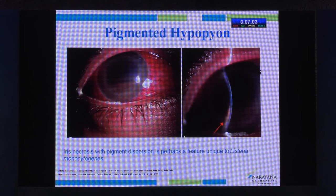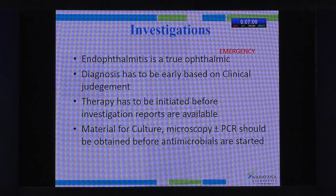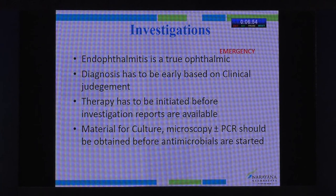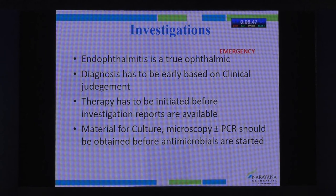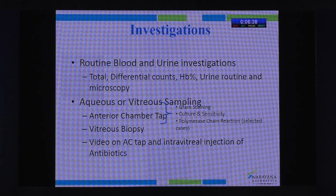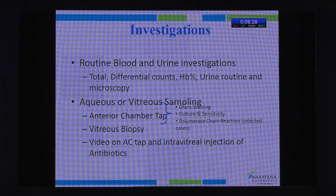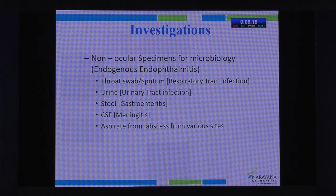Clinical symptoms include pain, diminished vision, and redness. Anterior segment findings are circumciliary congestion and hypopyon with AC reaction. Posterior segment findings include vitritis, retinal vasculitis, retinal hemorrhage, or retinal exudates. Pigmented hypopyon is classically described in association with iris necrosis secondary to Listeria monocytogenes infection. Investigations include specimens for culture, smear, and molecular diagnostic tests, while empirically starting antimicrobial therapy.